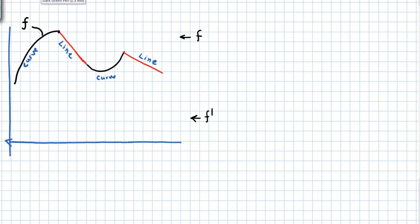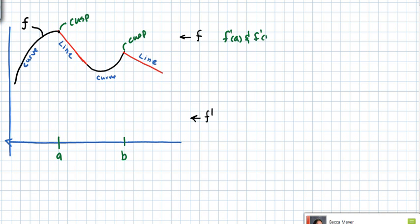Hopefully you recognize from before there's a cusp here and a cusp here. And so you would probably say if we called this a and this b, that f prime of a and f prime of b do not exist.